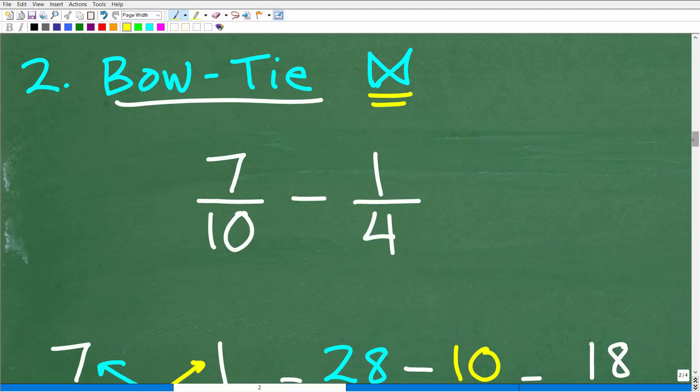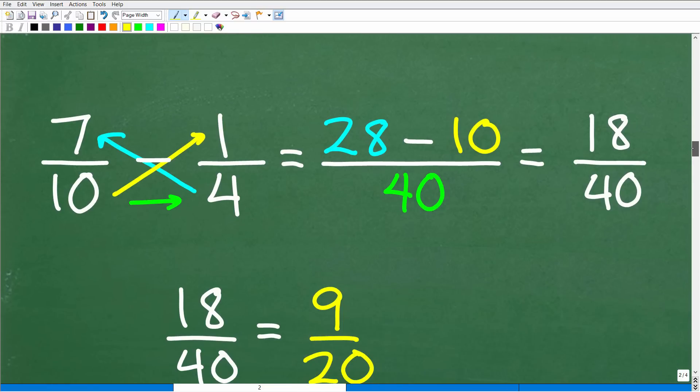Let's subtract these fractions using the bow tie method. This is an awesome method. What you're going to be doing is following this very specific pattern. We have 7 over 10 minus 1 over 4. You're going to start from the bottom right, 4, and you're going to go in this direction. You can see the blue arrow here.